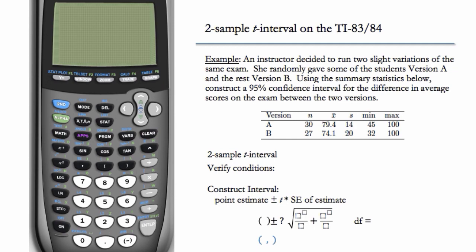So we have this example. An instructor decided to run two slight variations of the same exam. She randomly gave some of the students version A and the rest version B. Using the summary statistics below, construct a 95% confidence interval for the difference in average scores on the exam between the two versions.